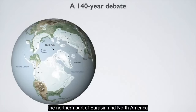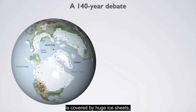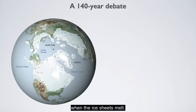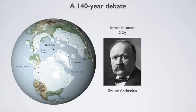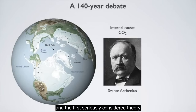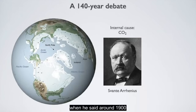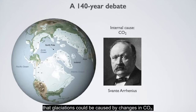Most of the time, the northern part of Eurasia and North America is covered by huge ice sheets. Short interglacials occur when the ice sheets melt. This was discovered 200 years ago, and the first seriously considered theory was proposed by Svante Arrhenius around 1900, who said that glaciations could be caused by changes in CO2.